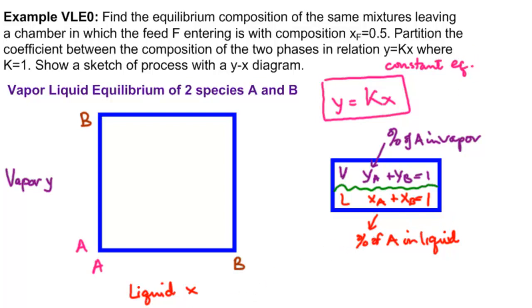Now for our problem, XF is 0.5, which means half is A and half is B. This corner would be no A, over here would be no B. So we have X = 0.5.